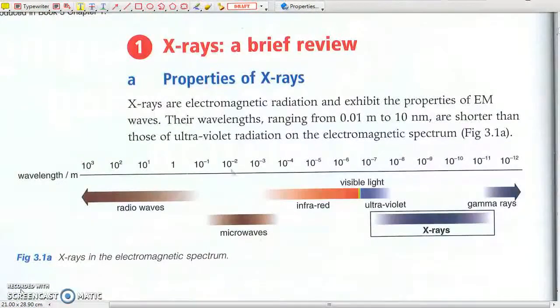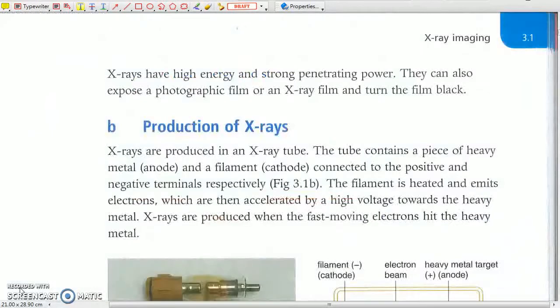1. X-rays: A Brief Review. a) Properties of X-rays. The wavelength of X-rays can be as long as one centimeter but as short as one nanometer. X-rays carry high energy and they are very penetrating.